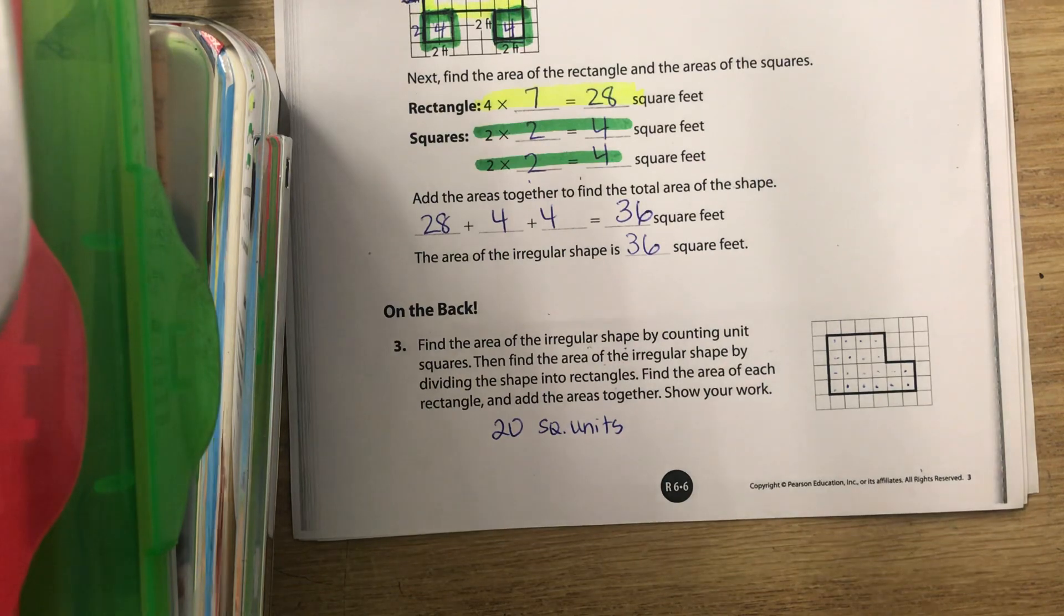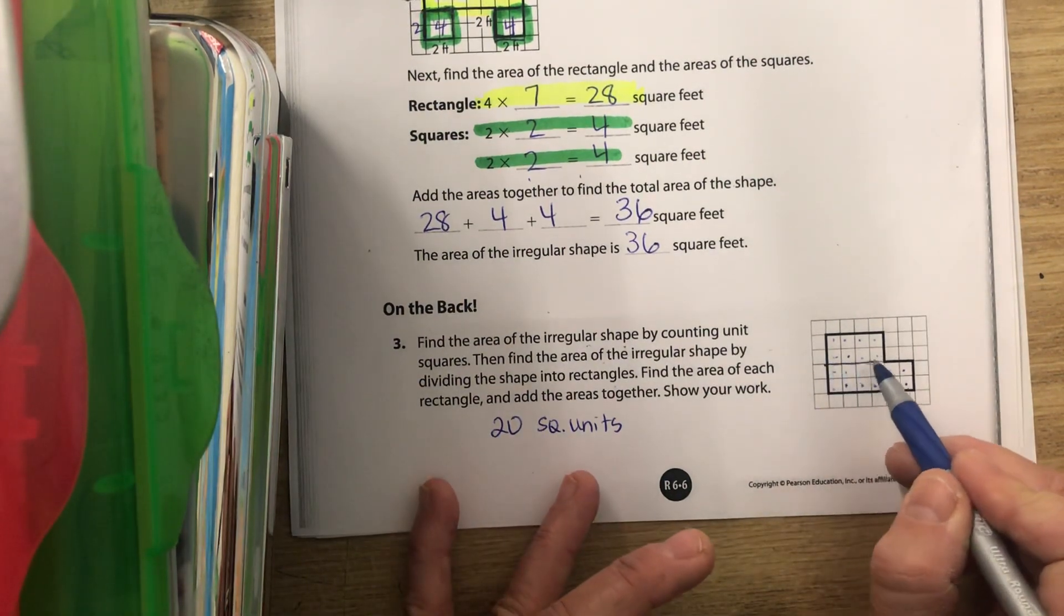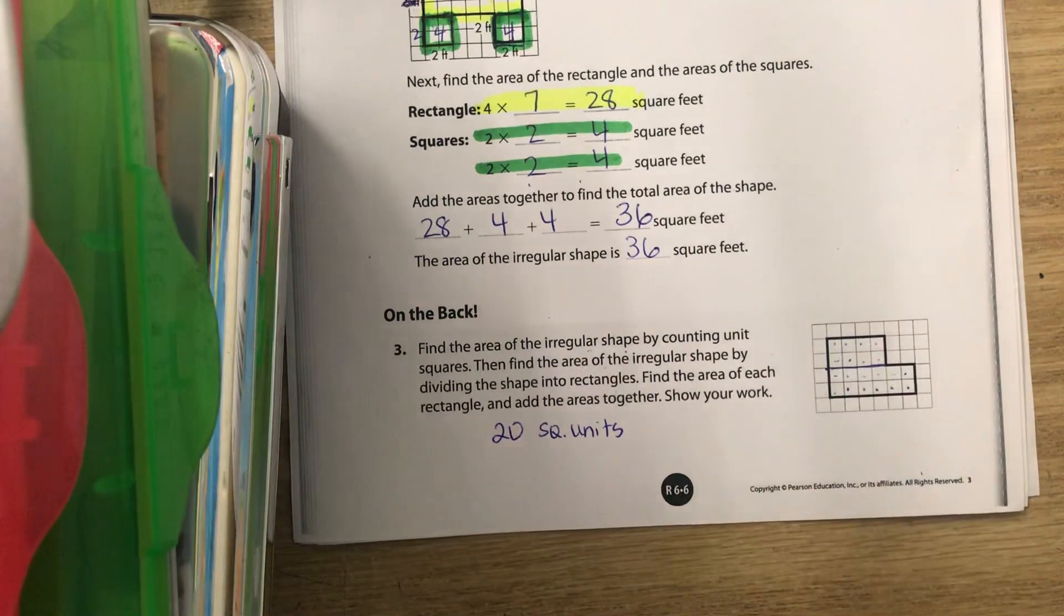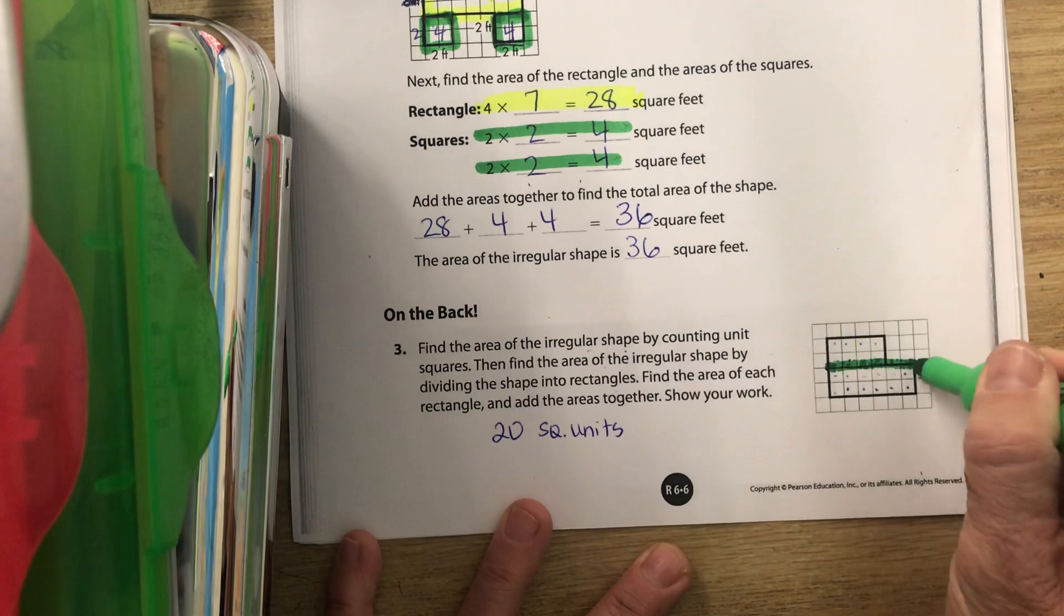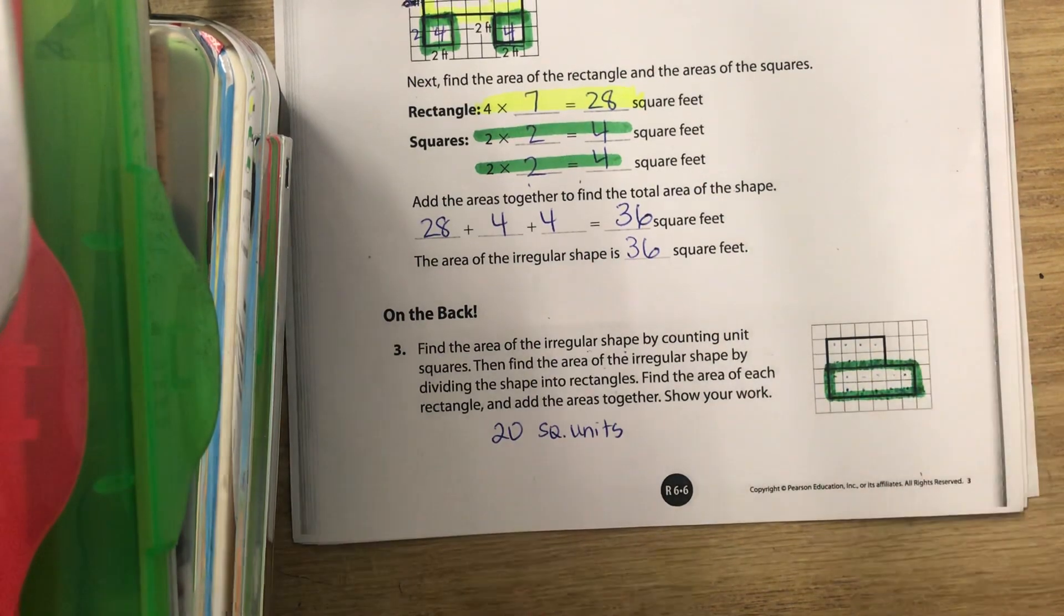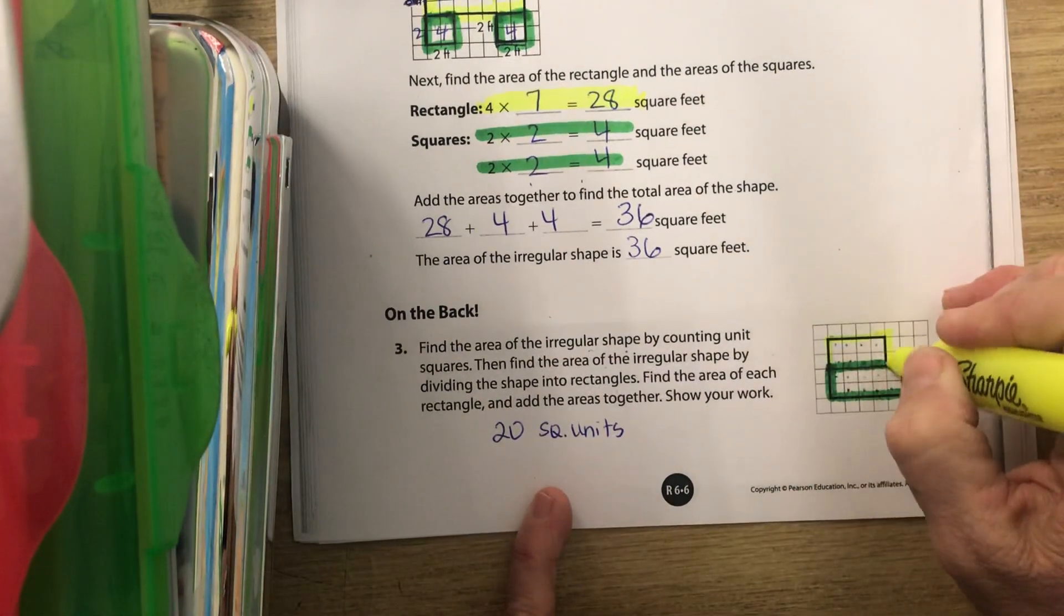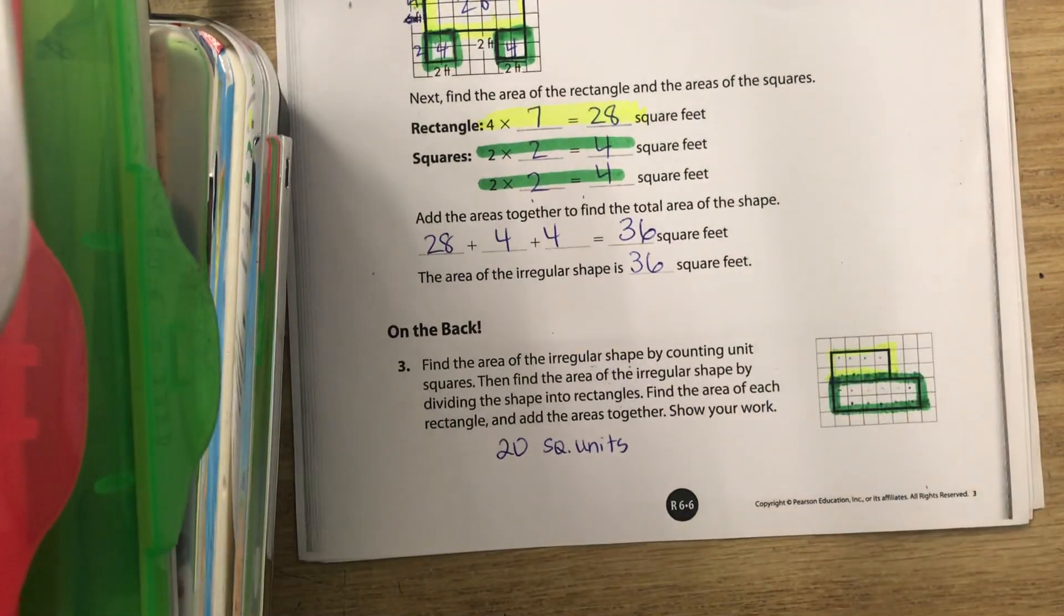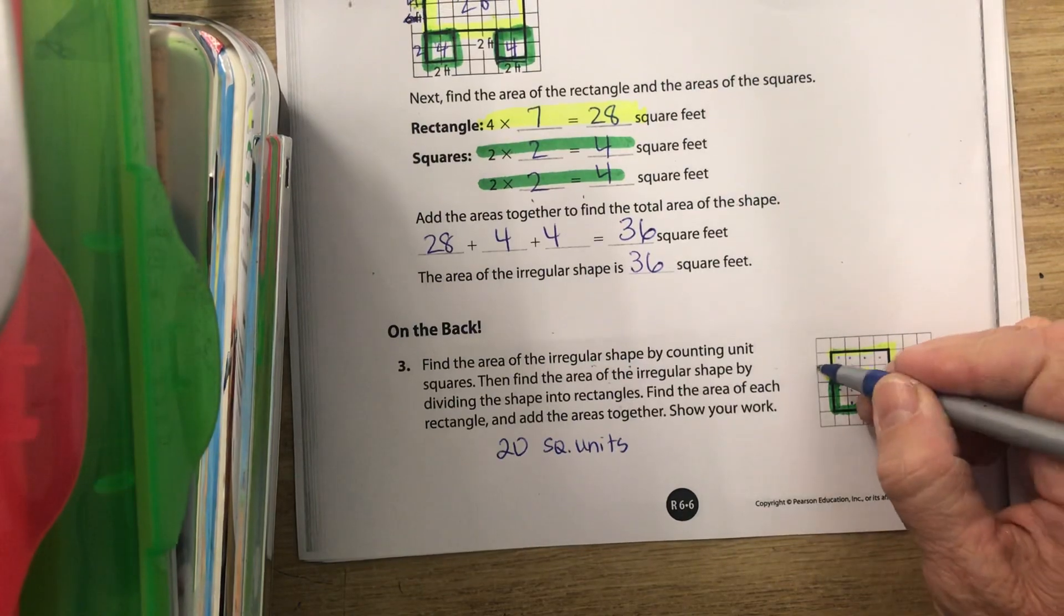So let's divide it up. There's two ways you can do it. You could draw a line right like this, and you could make this into one rectangle here and one rectangle there. They don't give you the sides, but you can use the grid boxes here, right? So this is two, this is two, this is four.